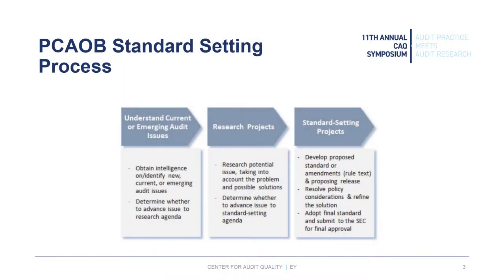This standard setting process can result in formal standard setting, but it can also result in other things like staff guidance. Once the research phase is complete and the staff makes a recommendation to the board, the board decides whether to take the project up. The staff will draft a proposing release, which will get exposed during the exposure period. There'll be a lot of back and forth among stakeholders. They'll consider comments — both formal and informal — and then make a determination on whether to finalize the project. One quirk with the PCAOB: because of Sarbanes-Oxley, the SEC has to formally approve any final rulemaking.